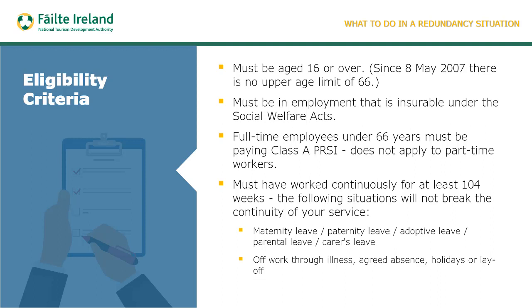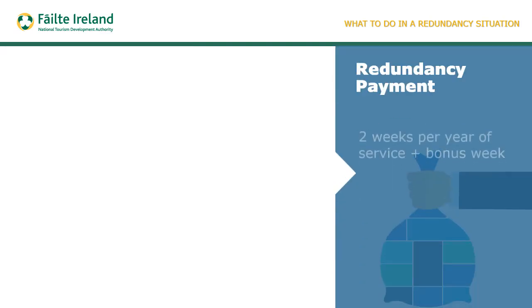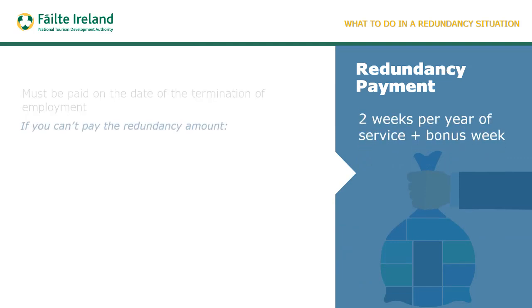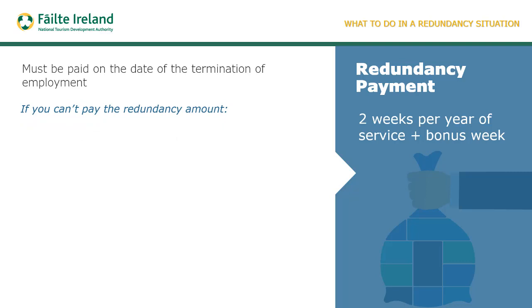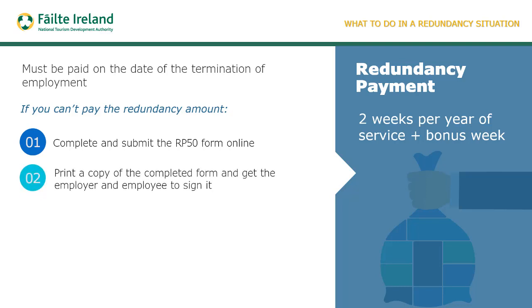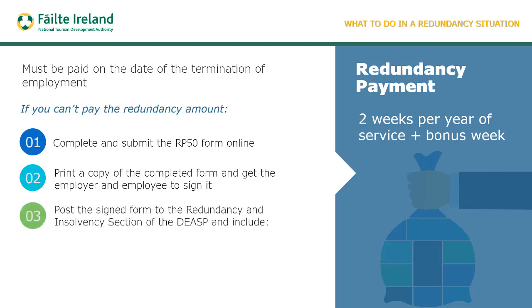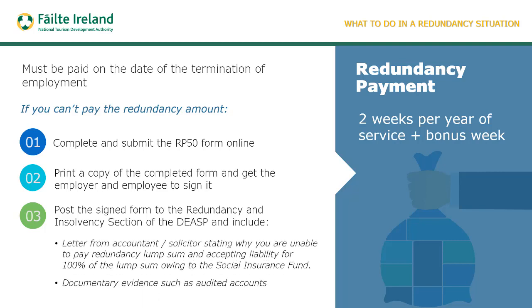The redundancy payment employees will receive is two weeks' wages per year of service plus a bonus week, paid on the date of termination of employment. If you can't pay the redundancy amount, complete and submit the RP50 form online, print a copy and get both employer and employee to sign it, then post the signed form to the Redundancy and Insolvency section of the DSP. You'll also need a letter from your accountant or solicitor stating that you are unable to pay and accept liability for the lump sum owing to the Social Insurance Fund, along with documentary evidence such as audited accounts.